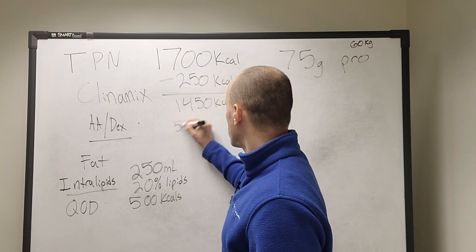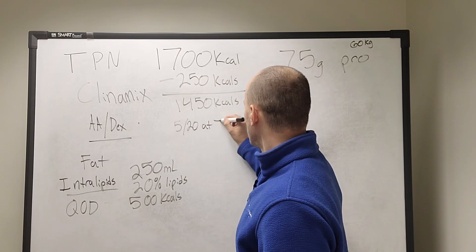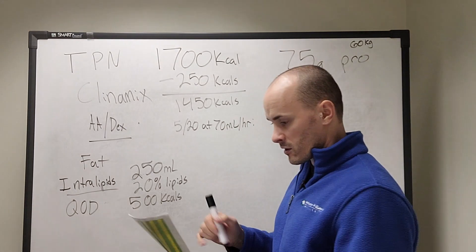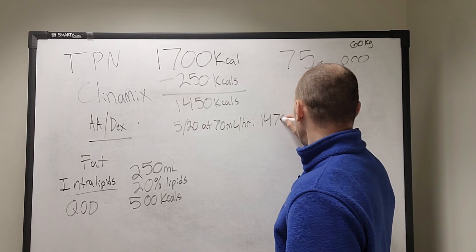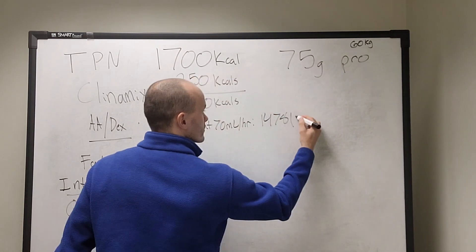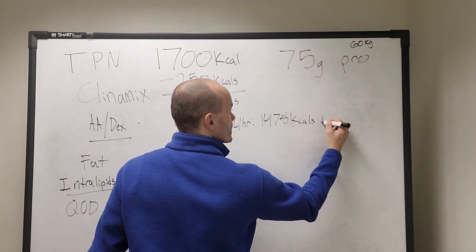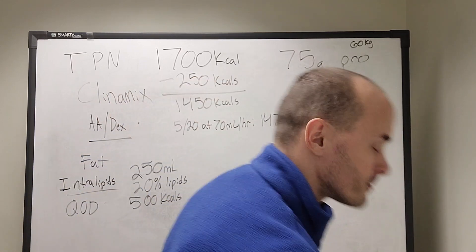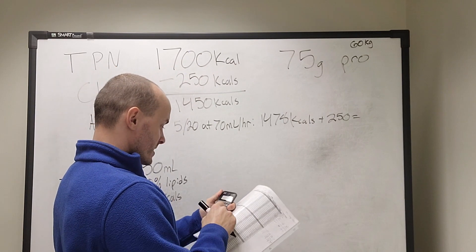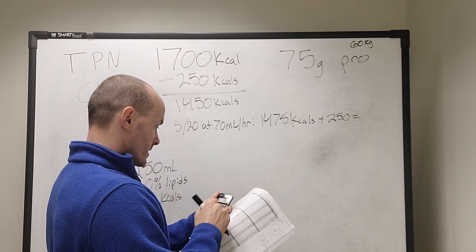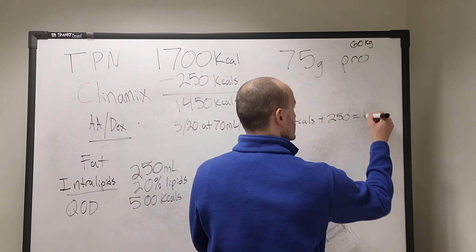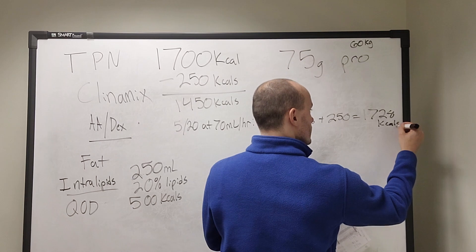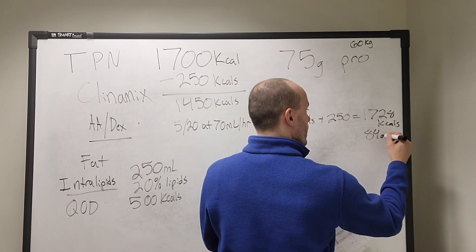We will go with the 520 solution at 70 mL/hr, which gives our patient 1,478 calories plus the 250 from the fat — so 1,478 plus 250 gives us 1,728 kcals and 84 grams of protein.